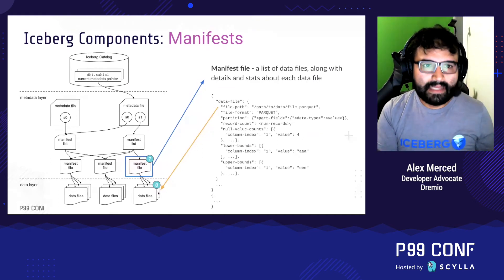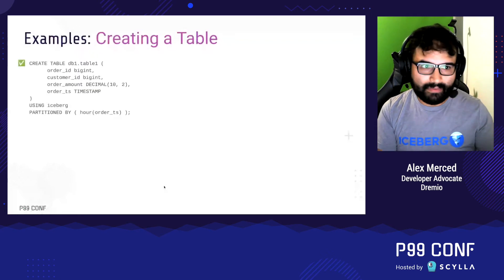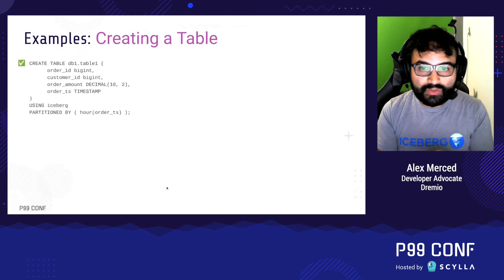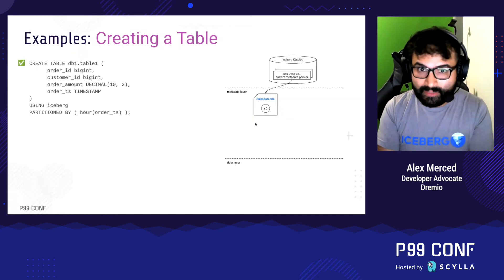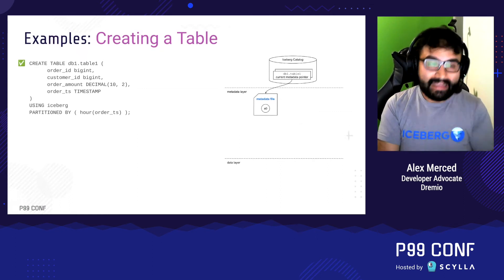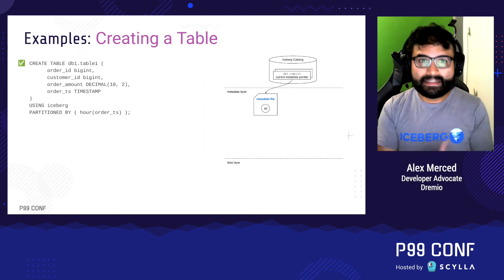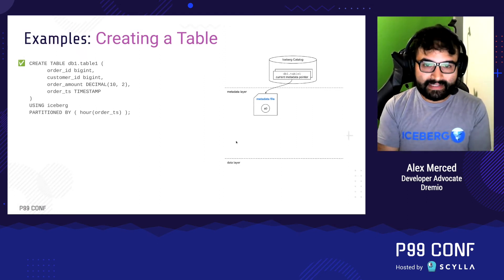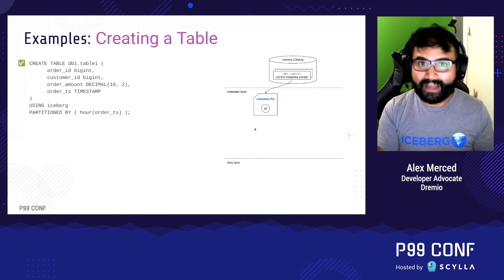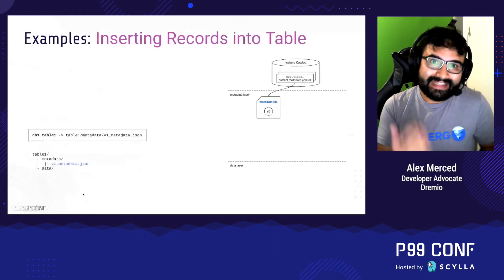Let's show this at work with a couple example queries. First, creating a table: I'm running a standard SQL CREATE TABLE statement. All it's going to do is create a metadata file, because there's no data in the table yet. So there's no need for data files, no need for a manifest listing those files, and no need for a manifest list. All we need is a metadata file defining that the table exists and putting that as an entry in the catalog. You end up with just a metadata.json file.